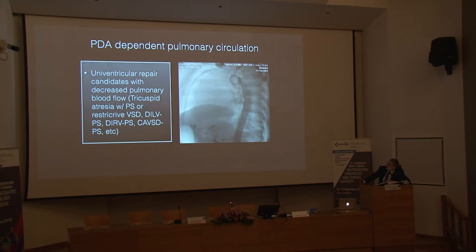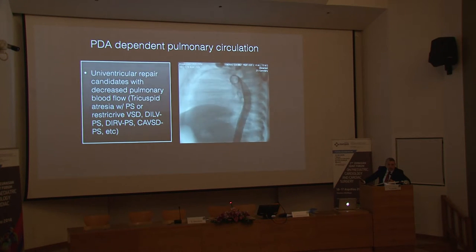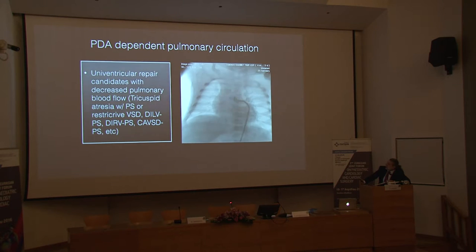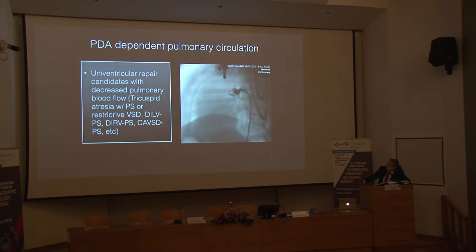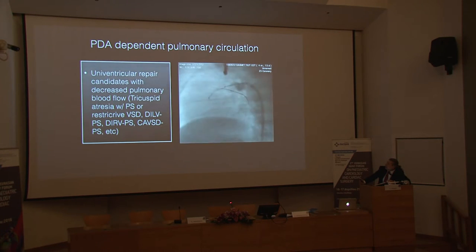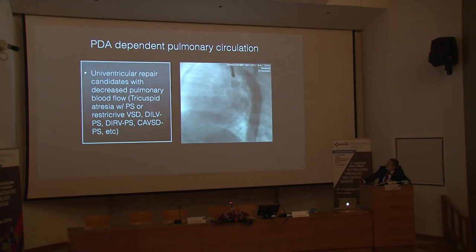For biventricular repair candidates, PDA stenting is a good option since you only need about four to six months until the Glenn operation. Even if the ductus appears very tiny, with patient guide wire manipulation, it's usually possible to cross it. Once the wire is in place, stent delivery is almost always possible, and afterwards the result looks much like a BT shunt.